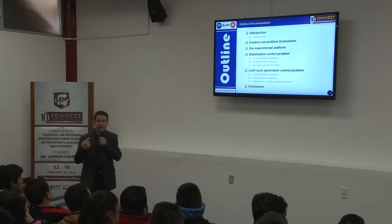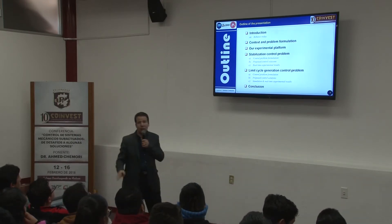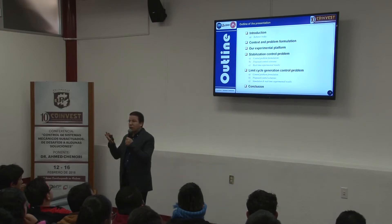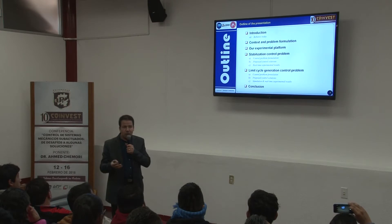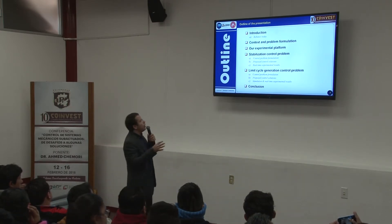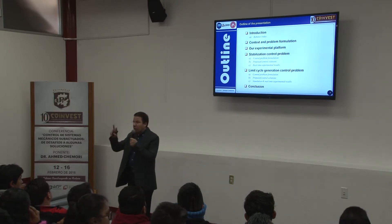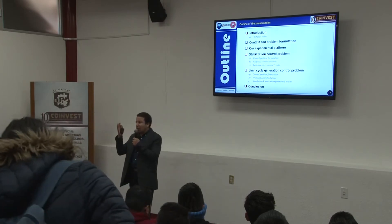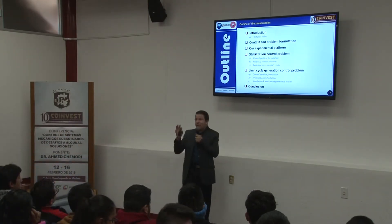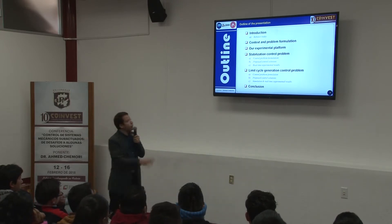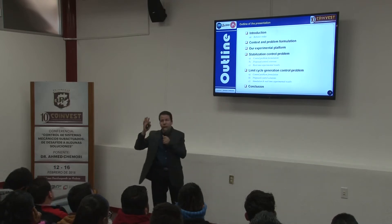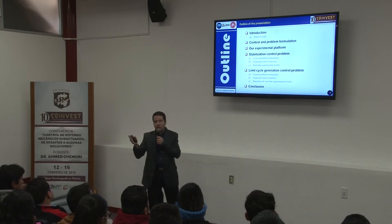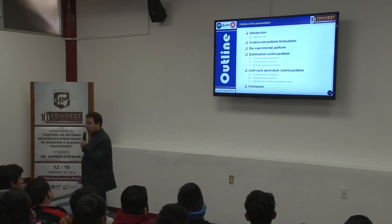Now we arrive at the outline of the presentation. I will start with a general introduction, then the context and problem formulation, where I will introduce the control problem of underactuated mechanical systems — the definition and why we are interested. Then I will present two problems: stabilization and limit cycle generation. For both problems, I will discuss the control formulation, proposed solutions, and real-time experiments, then conclude.